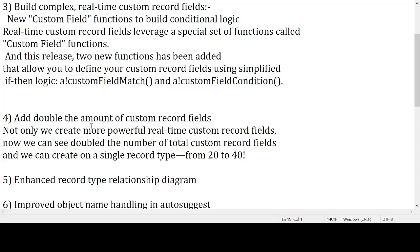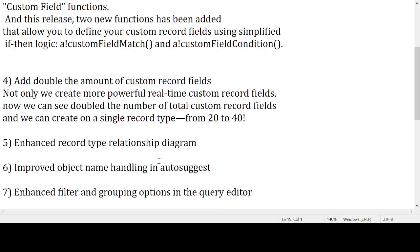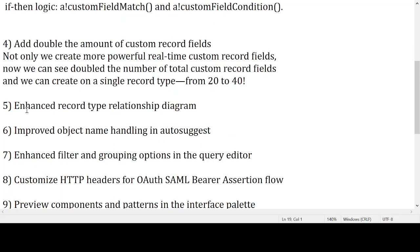The fourth point is: add double the amount of custom record fields. Not only can we create more powerful real-time custom record fields, we can now see double the number of total custom record fields we can create on a single record type — from 20 to 40. The fifth point is: enhance the record type relationship diagram. The sixth point is: improved object name handling in auto-suggestion.